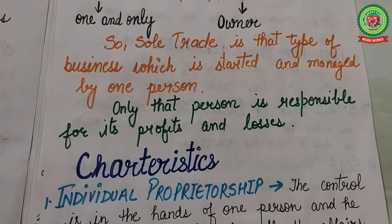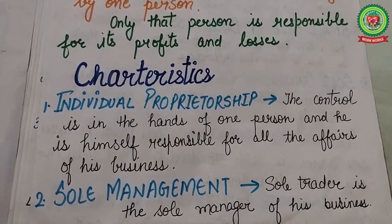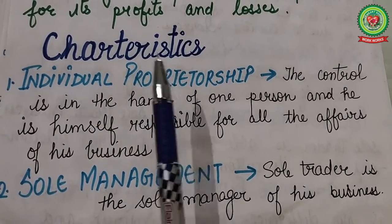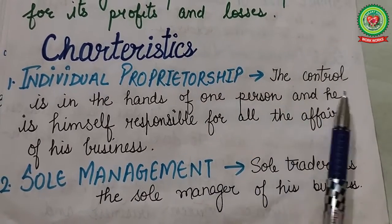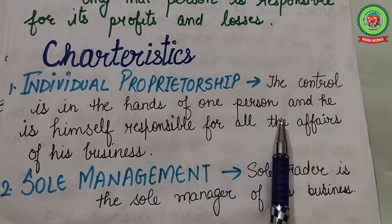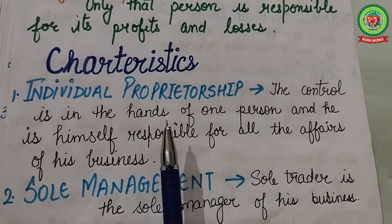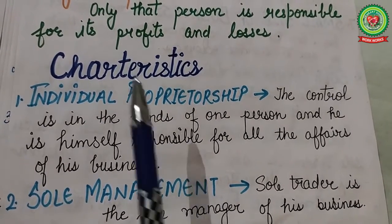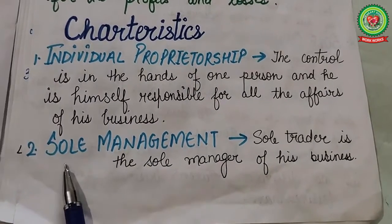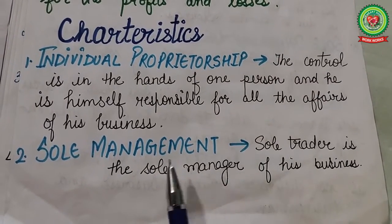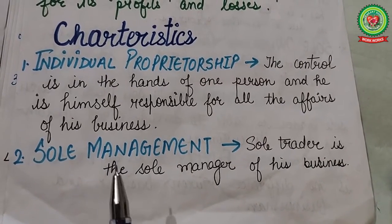Next is the characteristics of sole proprietorship business. The first characteristic is individual proprietorship — in such an organization, the control of the business is in the hands of one person, and he is responsible for all the affairs of his business. The second characteristic is sole management — the sole trader is the sole manager of the business, and he is himself responsible for the functioning of his business.